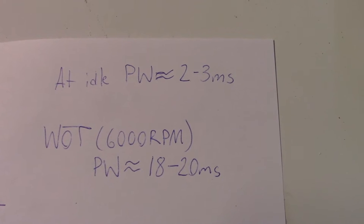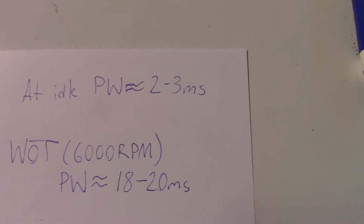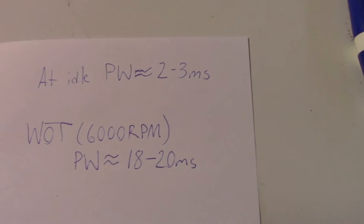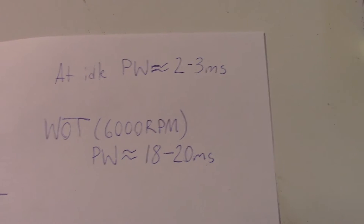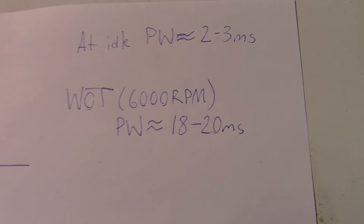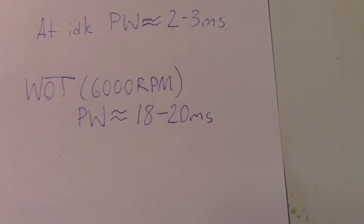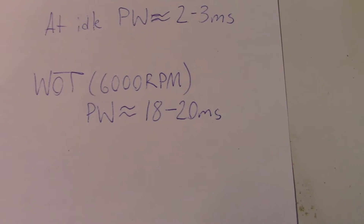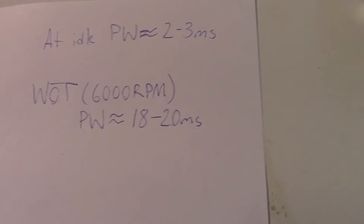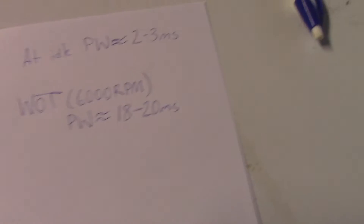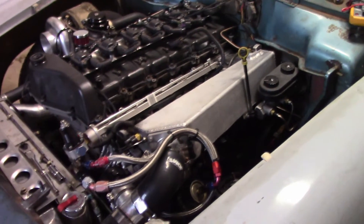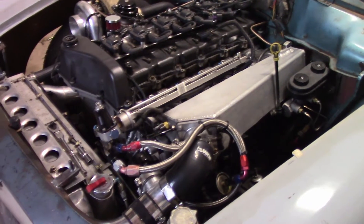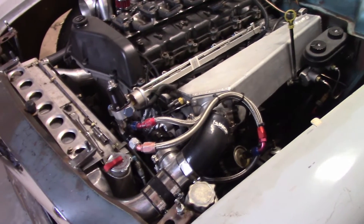Why is injector data important? At idle, your total pulse width is usually around two to three milliseconds. If you're 0.3 milliseconds off, that makes a pretty big difference in how much fuel is being flowed. On the other hand, at wide-open throttle on a four-stroke engine at 6,000 RPM, you're going to have injector pulse widths of around 18 to 20 milliseconds, so that 0.3ms error doesn't matter as much. Usually, having bad injector data will heavily affect you at idle — you'll have a really rough idle and it just won't idle right.